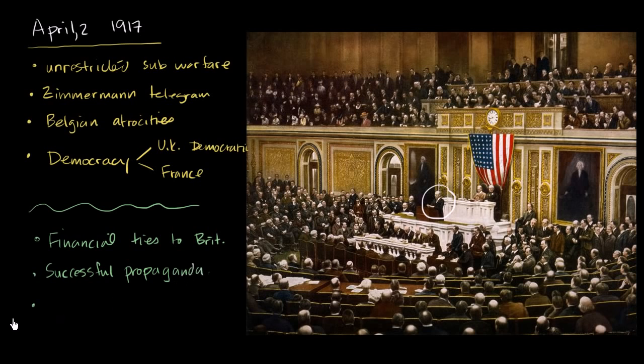A more cynical view of why the US entered the war — and this is true of probably most wars — is that there was a lot of lobbying on the part of war profiteers. In fact, in Little Orphan Annie, Daddy Warbucks's last name is Warbucks because he made his fortune as a war profiteer during World War I. War profiteers are people who might be selling arms to the Allies, or who might sell arms to the US government if it entered the war. This includes folks on Wall Street, where there was significant lending to the Allies. The view is that if the Allies win, those loans are going to be made good.